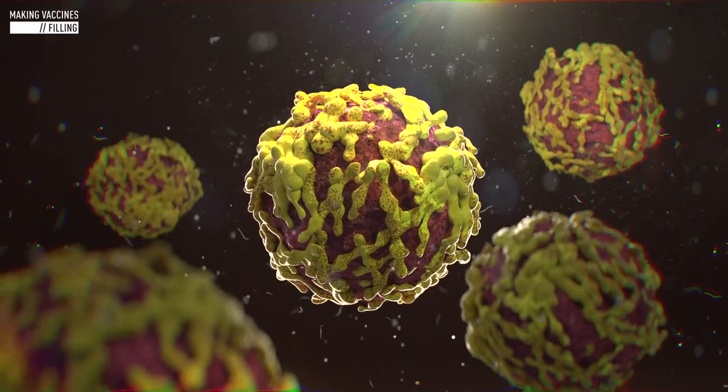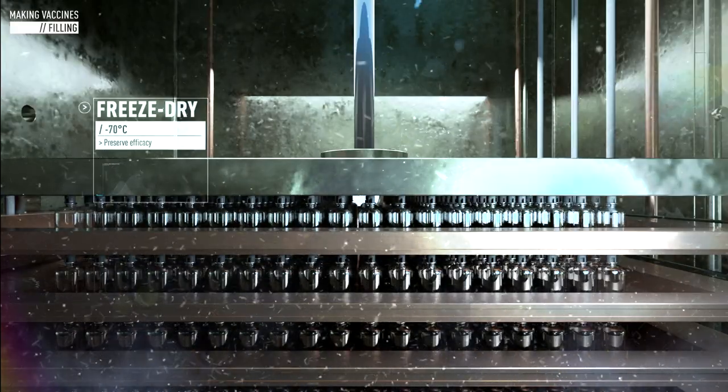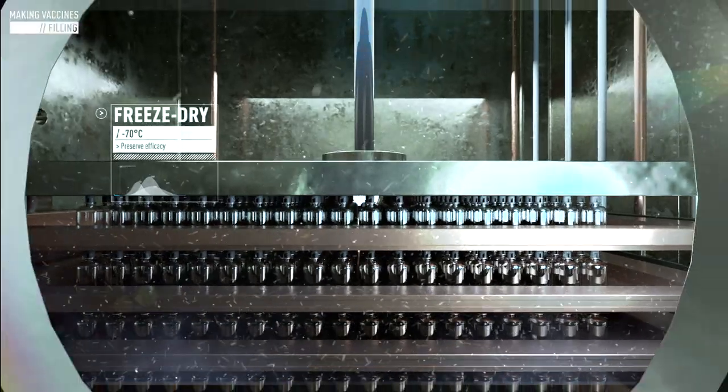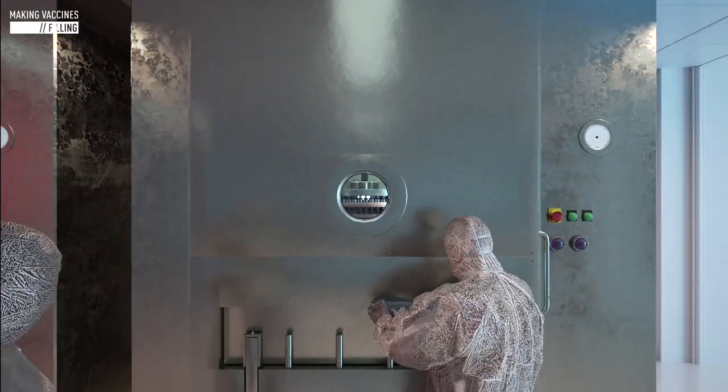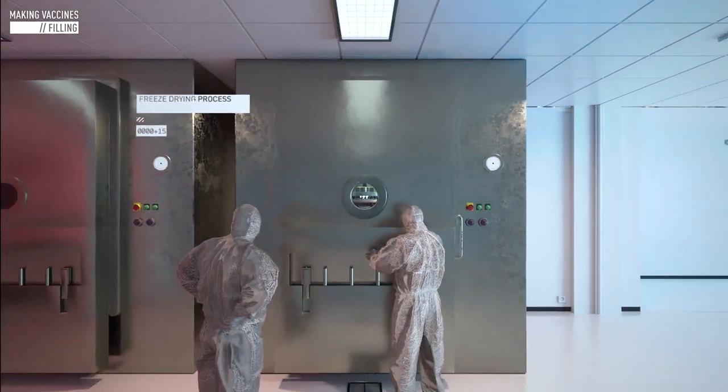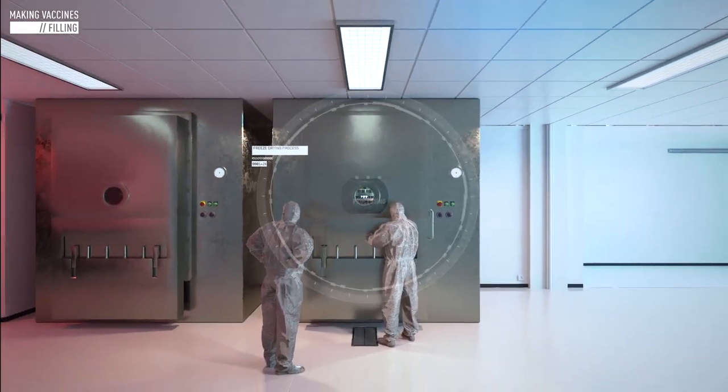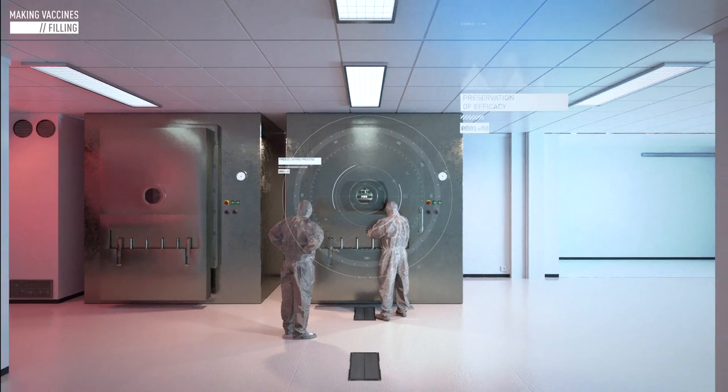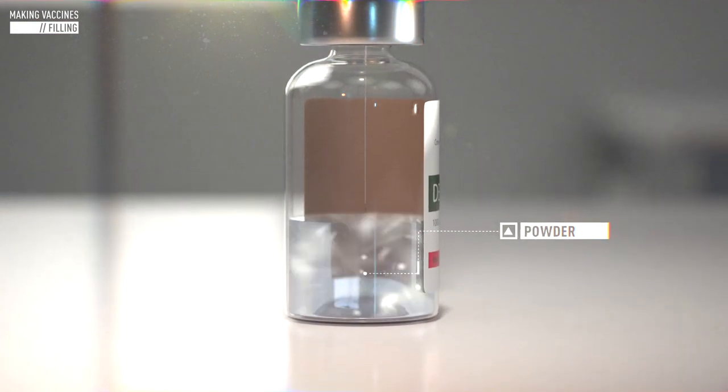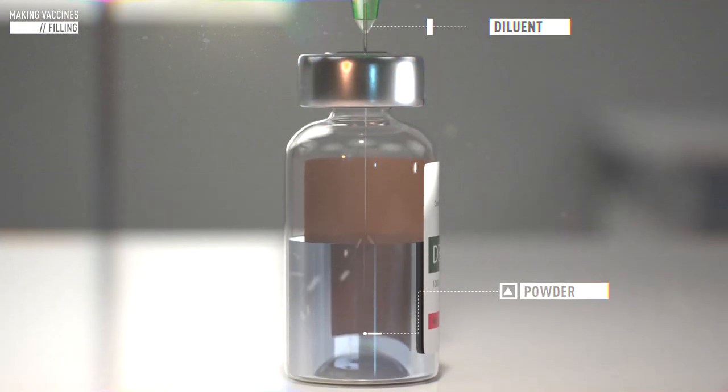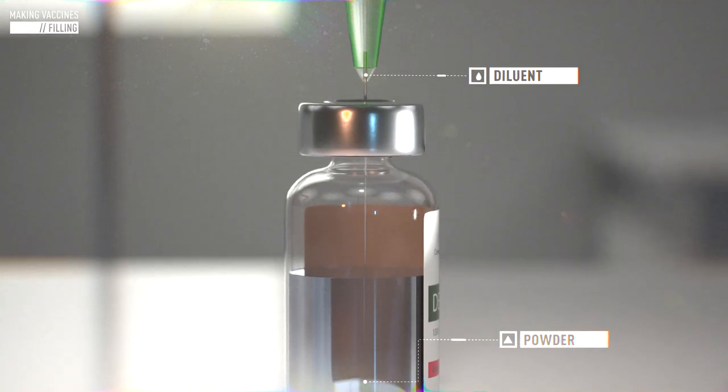Certain vaccines are also freeze-dried into a powder to help further preserve the vaccine's efficacy. This is particularly important for vaccines that are intended to prevent outbreak-prone diseases like yellow fever, where having available stocks on hand over time is an important element to combating and containing disease. When it's time for the vaccine to be administered, it will be reconstituted by combining this powder with a diluent.